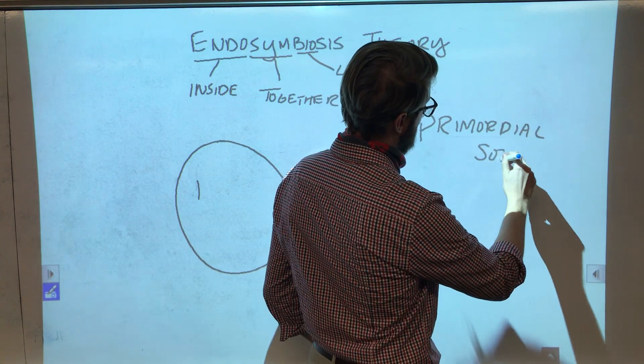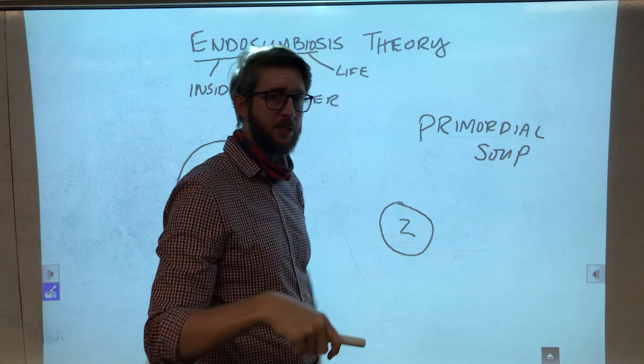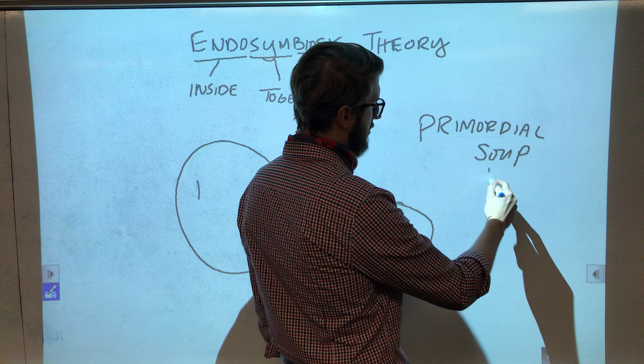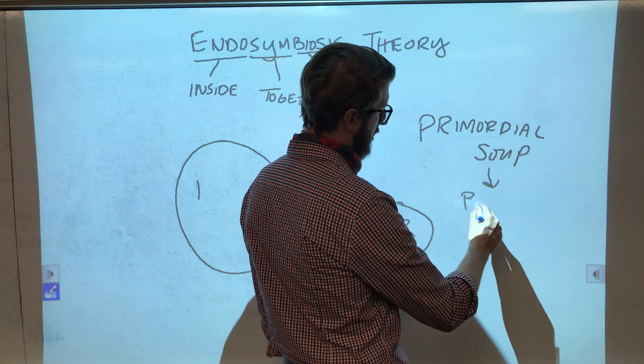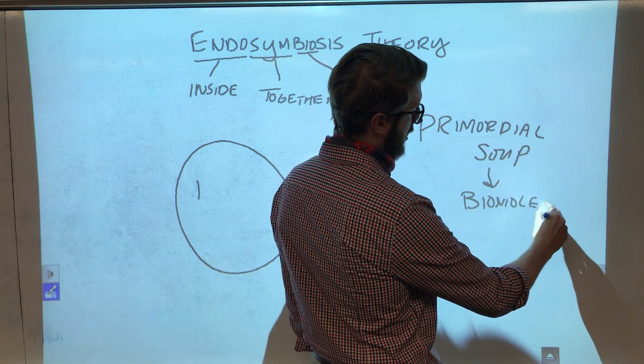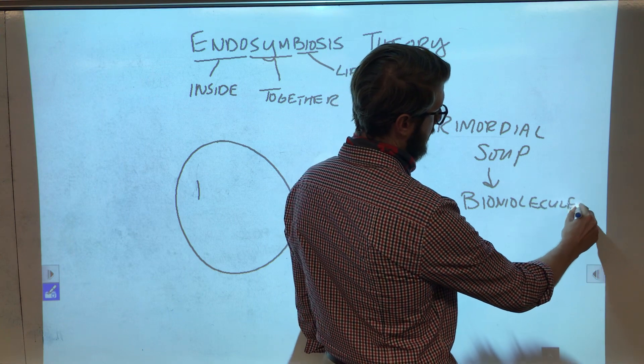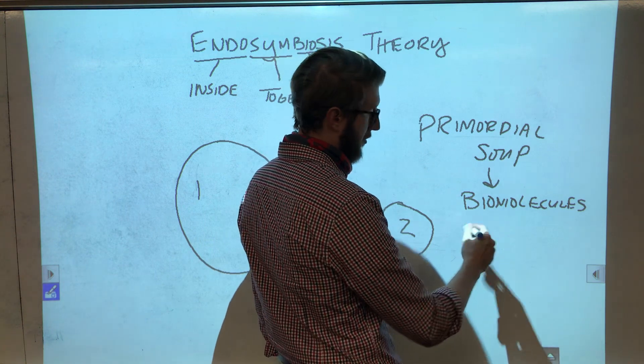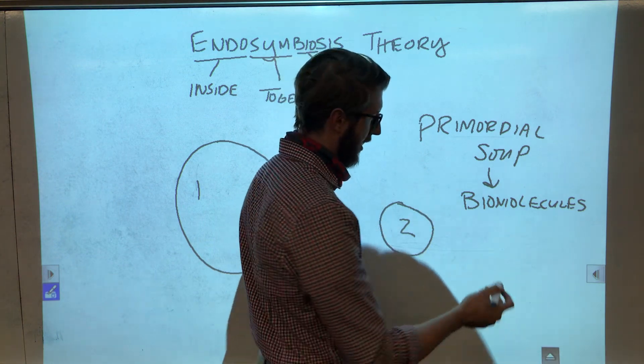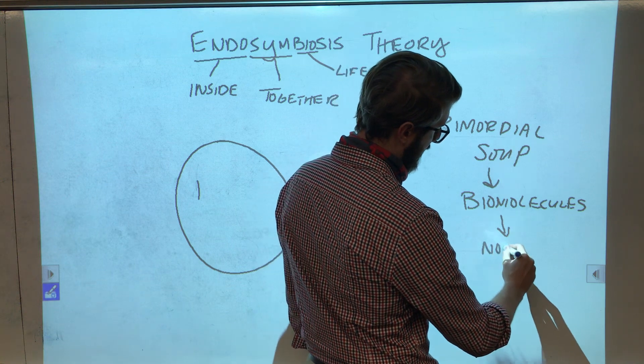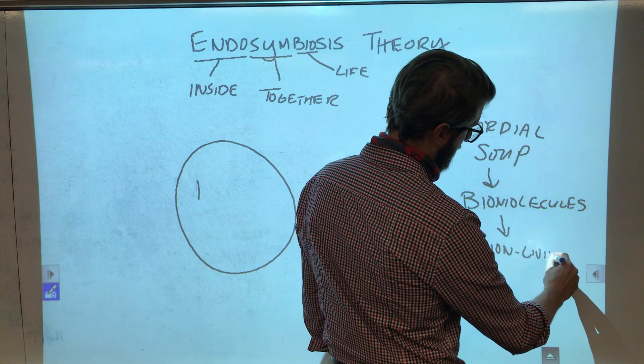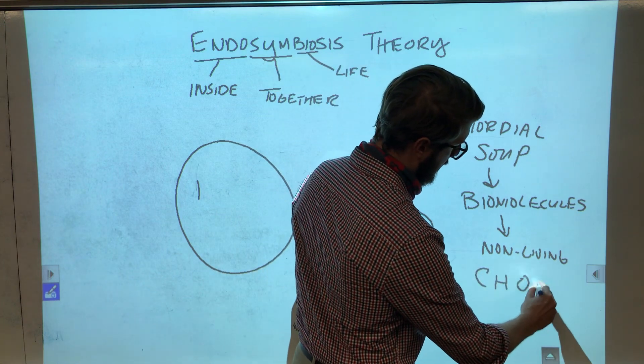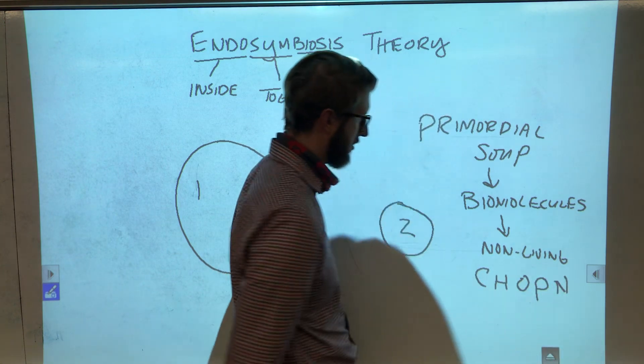We know from the last video, when we talked about the abiogenesis theory, we know that we could create biomolecules, or in other words, the molecules necessary for life to exist, which are carbs, lipids, proteins, nucleic acids, could be formed from non-living elements. Specifically, carbon, hydrogen, oxygen, phosphorus, and nitrogen.